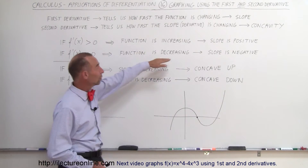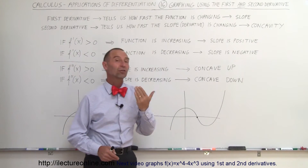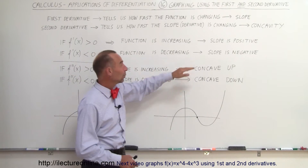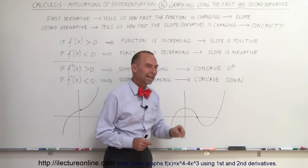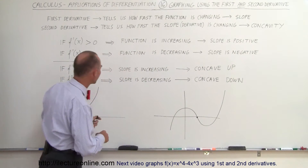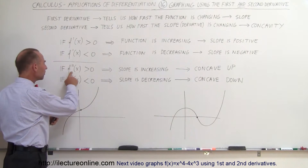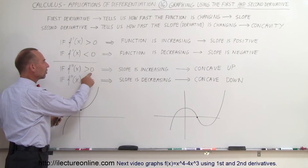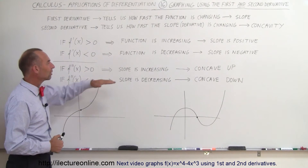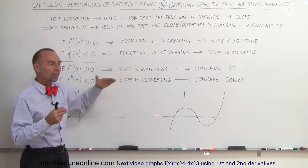If the function is increasing, we know the slope is positive. If the function is decreasing, we know the slope is negative. But what about the second derivative? If the second derivative is greater than zero, we know that the slope is increasing.